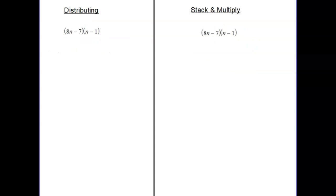Same thing, even if it's uglier. Every piece goes to every piece. If I'm distributing, 8n times n is 8n². 8n times negative 1 is negative 8n.